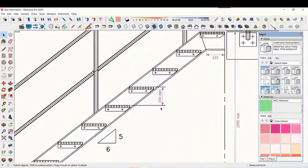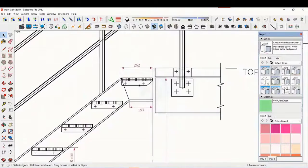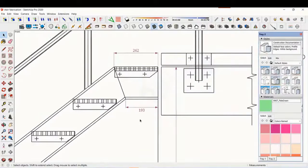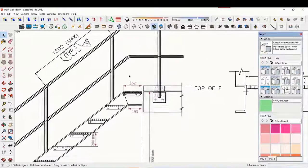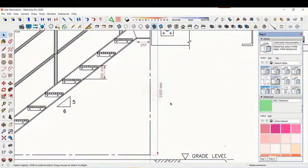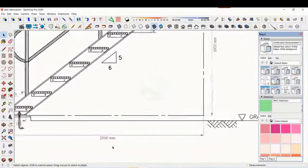The basic structure is made from ISMC 200. The height of the staircase is 1900 mm and the length is 2500 mm. The width of the staircase is 750 mm.